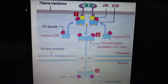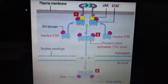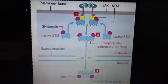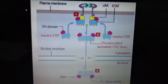The JAK-STAT system is a major signaling alternative to the second messenger system. There are three main components: first, the receptor; second, the Janus kinase, which is the JAK; and third, the signal transducer and activator of transcription, which is the STAT.